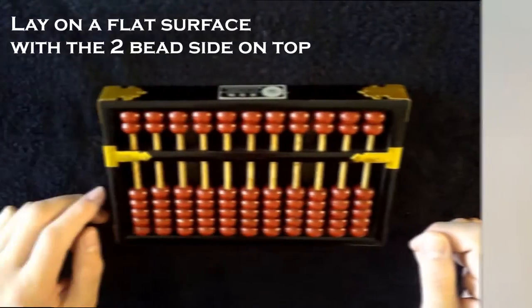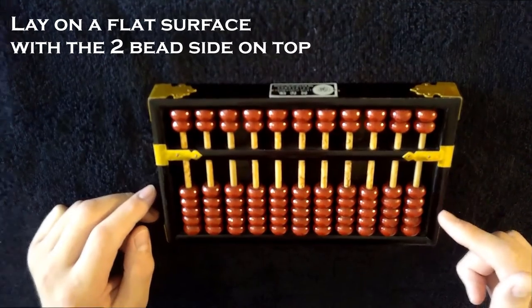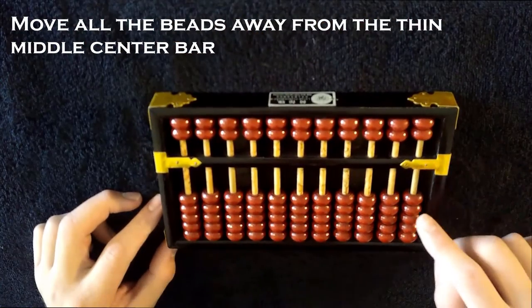How to use an abacus? This is a basic beginner 2x5 abacus, meaning there's two top beads and five below.